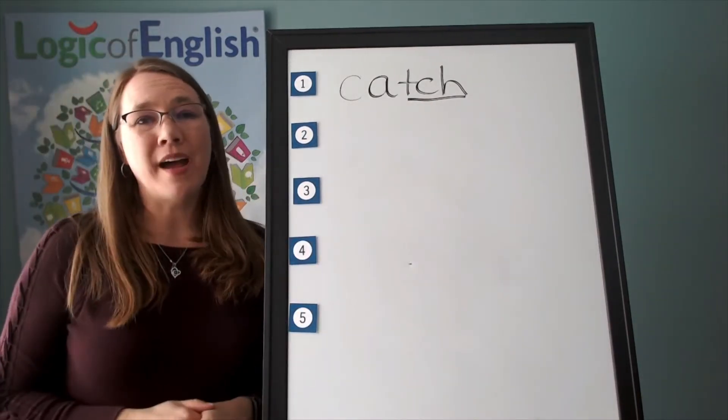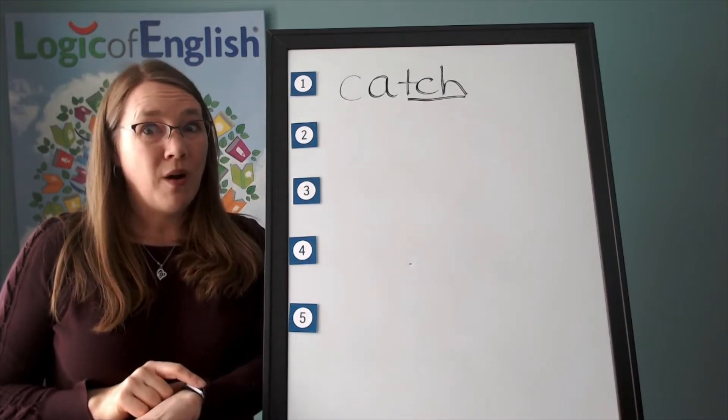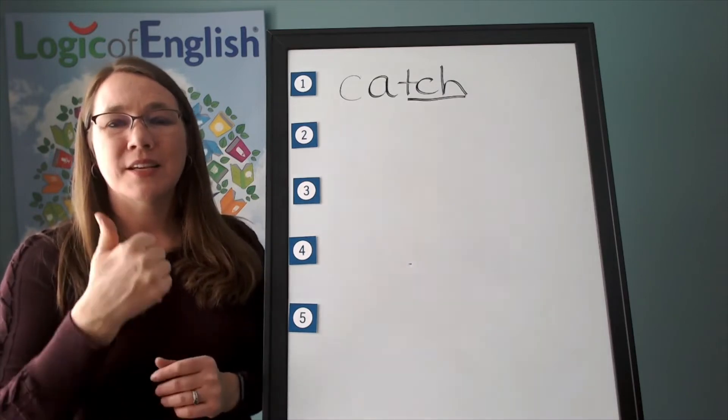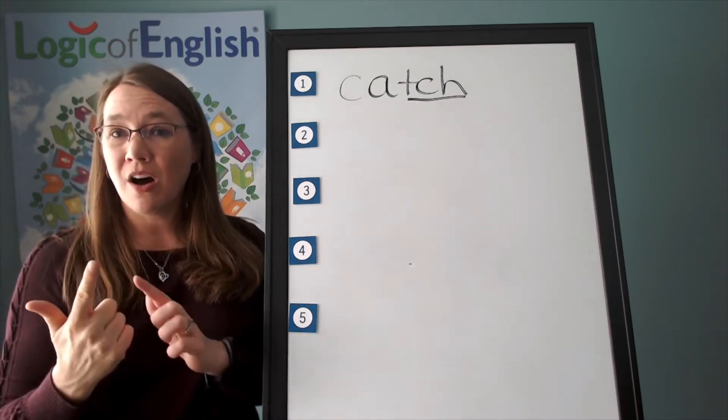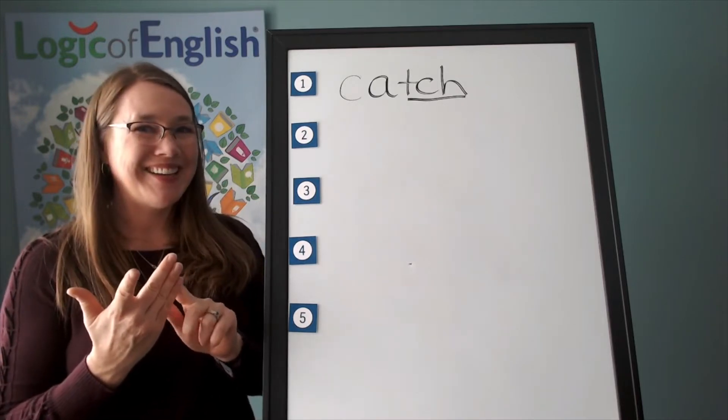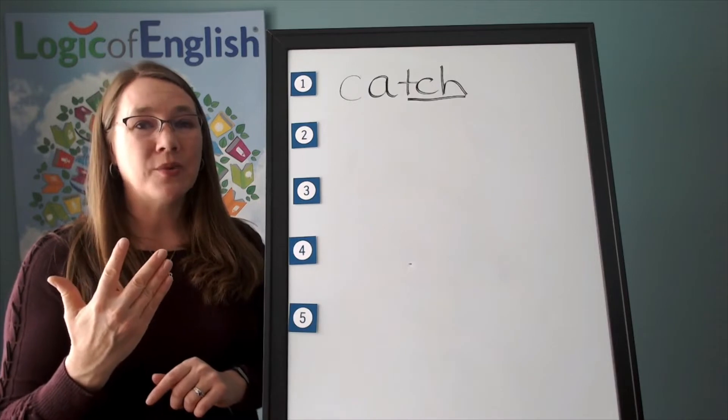The next word is watch. I am wearing a watch. Watch. Go ahead and say watch. Watch. Let's sound it out. W, a, use an a, ch. Do you see that? It's the ch, the three-letter ch sound. Go ahead and write watch.